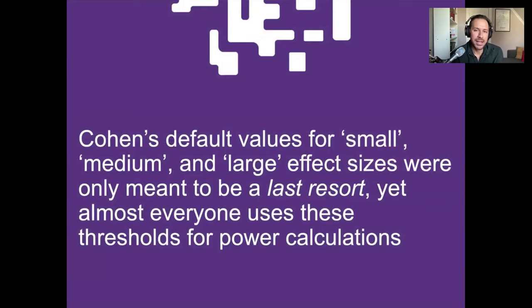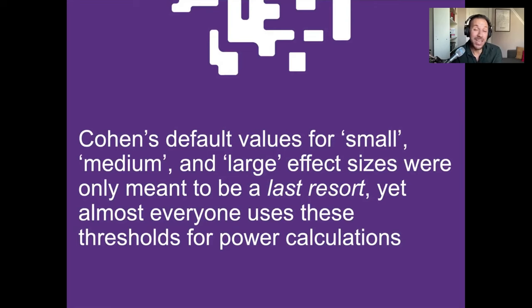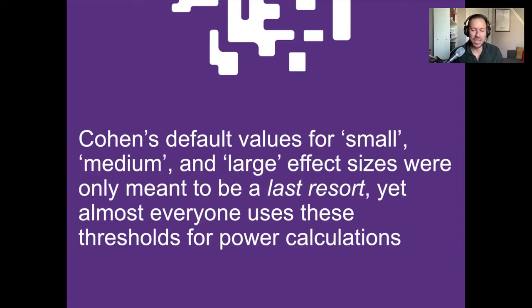Related to that, in the biomedical sciences researchers often use Cohen's default values for what constitutes a small, medium, and large effect. However, this was only meant to be used as a last resort when you don't actually know what a large, medium, or small effect is. In conversations with friends, Cohen admitted he wished he'd never made these thresholds, because they've done a fair bit of damage — people are using them without thinking. What constitutes a small effect size for one field doesn't necessarily reflect a small effect size for another field, yet almost every study uses one of these three thresholds for power calculations.